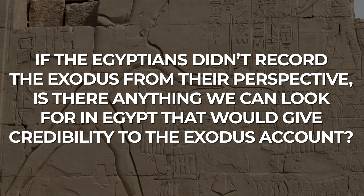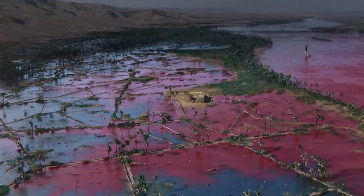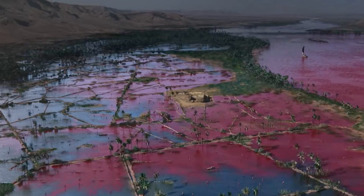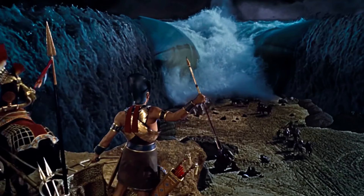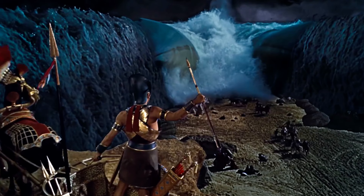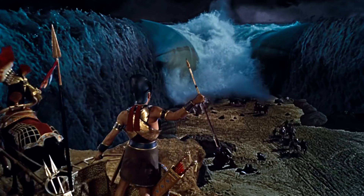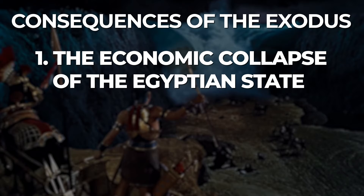Perhaps the two things that the Exodus is most famous for are the ten plagues God brought on Egypt for refusing to let the Israelites go, and the miraculous crossing of the Israelites through the Yom Suf, which resulted in the drowning of Pharaoh's army. If we are going to regard the Exodus narrative seriously, then there are two major consequences that we can look for in the historical record: number one, the economic collapse of the Egyptian state, and number two, a period of Egyptian military weakness.